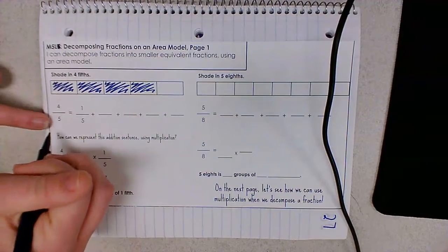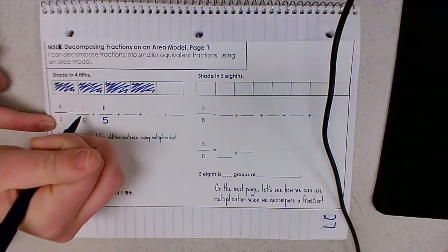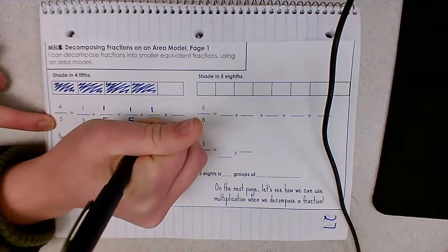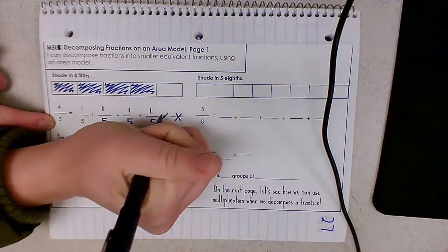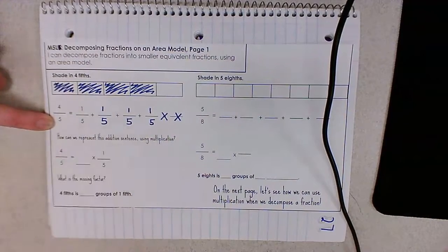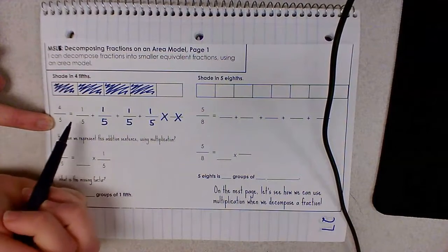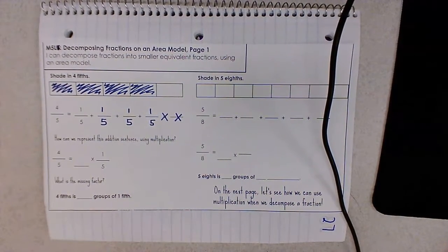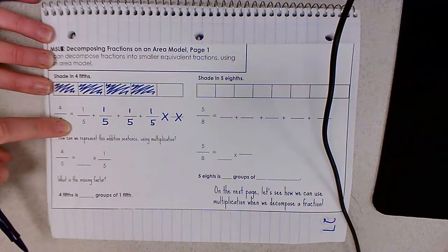So I'm going to finish this addition sentence. Four-fifths equals one-fifth plus one-fifth plus one-fifth plus one-fifth. Four-fifths is equivalent to one-fifth plus one-fifth plus one-fifth plus one-fifth. But that's not new information for you — you've already practiced that skill. So let's make it more efficient. How can we represent this same repeated addition sentence, but instead use multiplication?